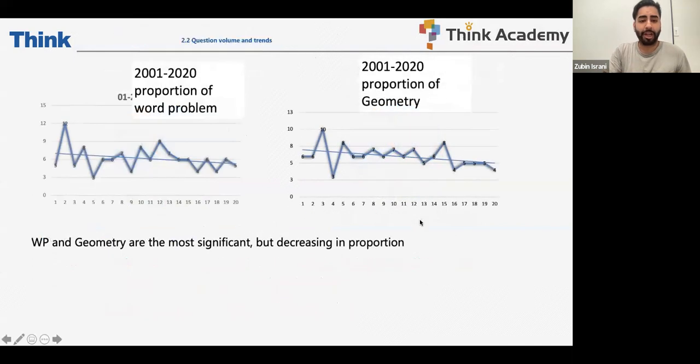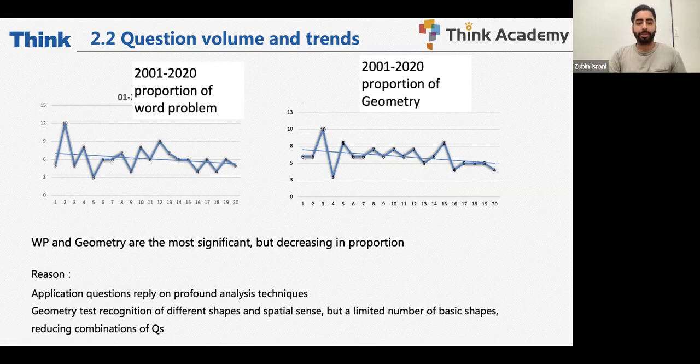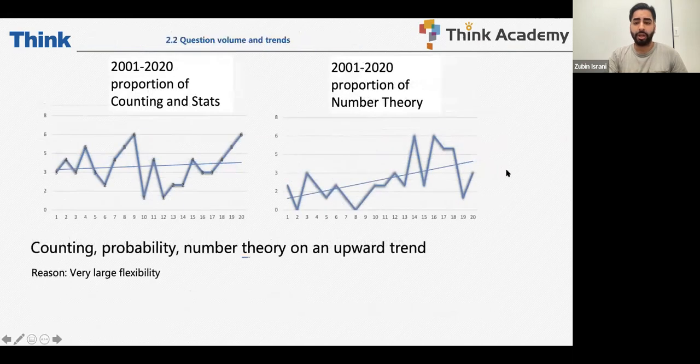Other modules have been consistent in terms of allocation. Now let's look at the proportion of distribution for the highest question volume, which is obviously from geometry and word problems. As you can see over the past years, it has reduced. It is decreasing in proportion. That being said, it is still the most heavily weighted type of question. The reason being is that for younger grades, grade five specifically, the application questions rely on profound analysis techniques. The benefit of the doubt is given to the students that these are not developed completely until you reach grade six or seven. Second reason being specifically for geometry, the test recognizes that the different shapes and spatial sense is a skill that every student needs to know for these difficult geometry questions. However, there are limited number of basic shapes. You can have different combinations of shapes, but the original bank of shapes is still the same, which reduces the possibility of innovation in questions.